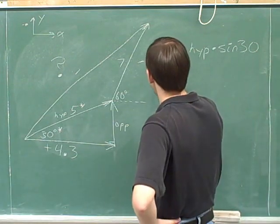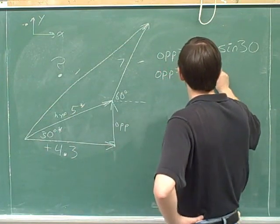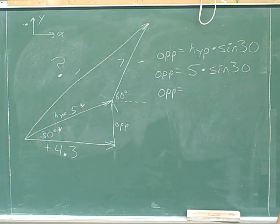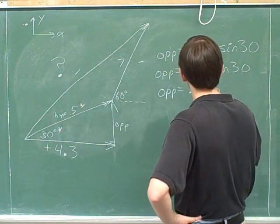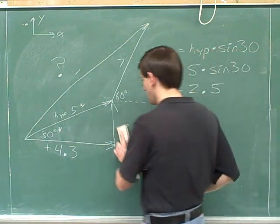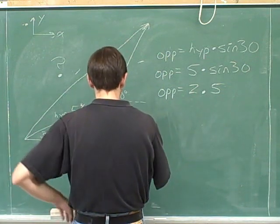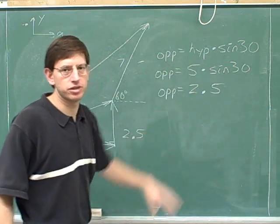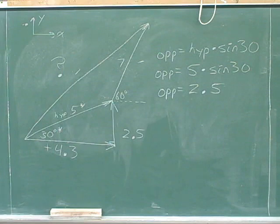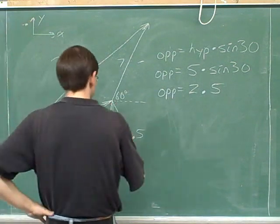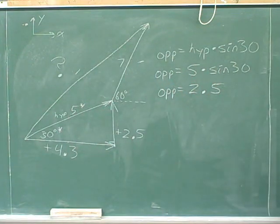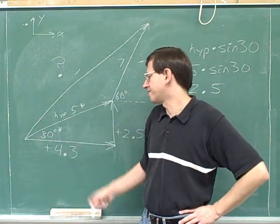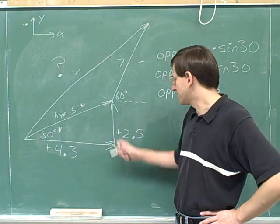Plugging in, the hypotenuse is 5 and the angle is 30 degrees, so we compute 5 times sine of 30, which equals exactly 2.5. The trig function gives us the magnitude, so we determine the sign separately. This component points upward, and we chose up as our positive direction, so the y-component is positive 2.5. We have now completely broken this first vector into its components: the horizontal component is positive 4.3 and the vertical component is positive 2.5.